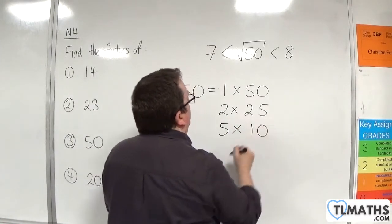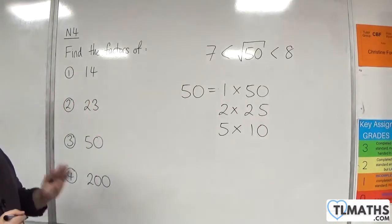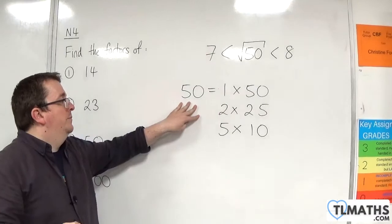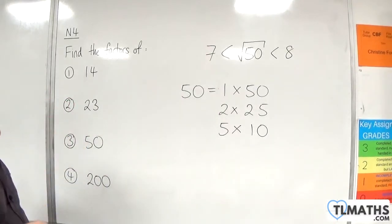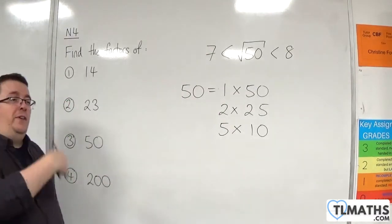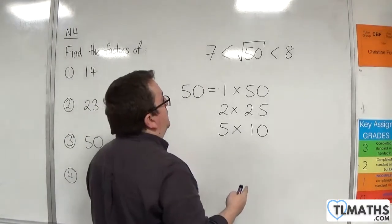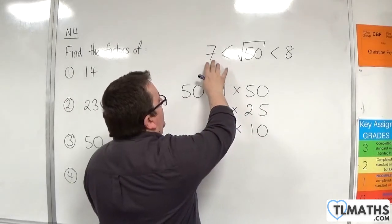How about 5? Well, 5 goes into it 10 times. 6 doesn't go into it, because 3 didn't go into it. And 7 doesn't go into it, because 7 7s is 49, 7 8s is 56. So, that's no good. And that's as far as I need to look.